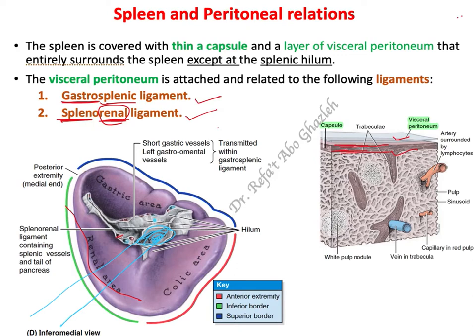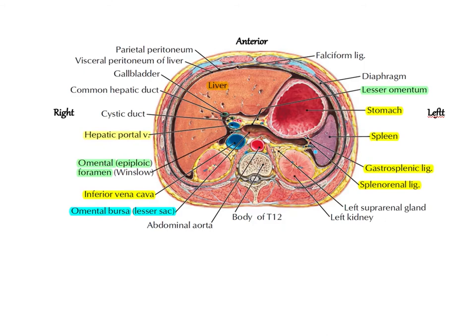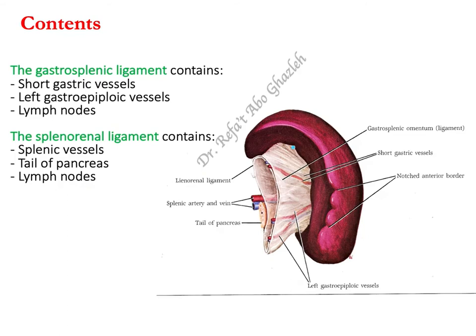In a cross-section view, you can see the gastrosplenic ligament between the spleen and stomach, and the splenorenal ligament between the spleen and the anterior surface of the kidney. The splenorenal ligament contains the tail of the pancreas and the splenic artery and vein, which enter and leave the hilum. So there are two ligaments: the gastrosplenic ligament and the splenorenal ligament.